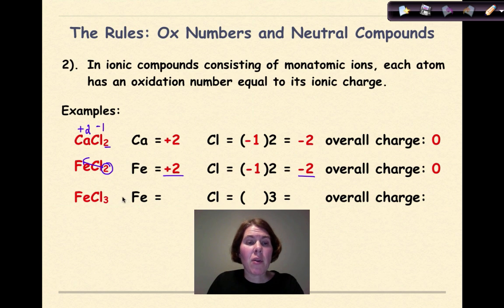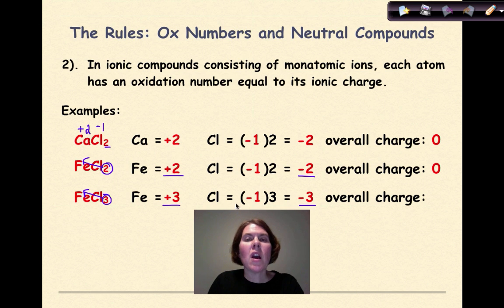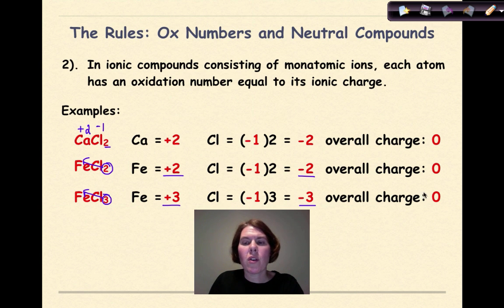For FeCl3, uncrisscrossing the 3 tells us Fe must be plus 3. Chlorine is minus 1; minus 1 times 3 gives minus 3. With plus 3 and minus 3, those two charges cancel each other out for an overall charge of 0.